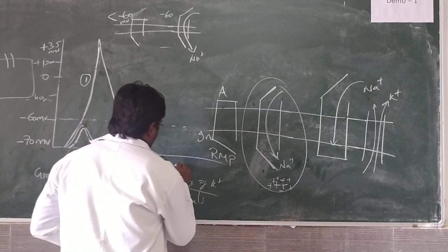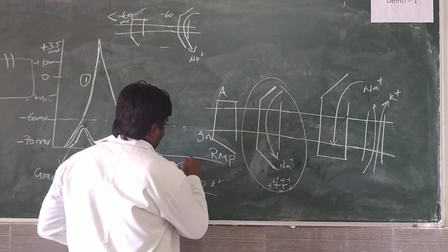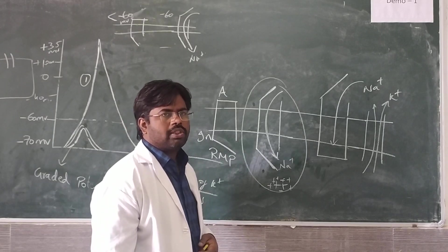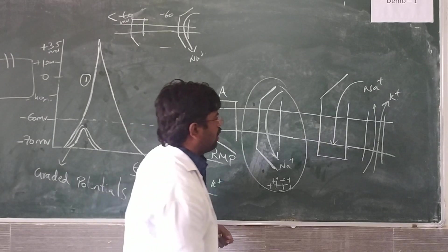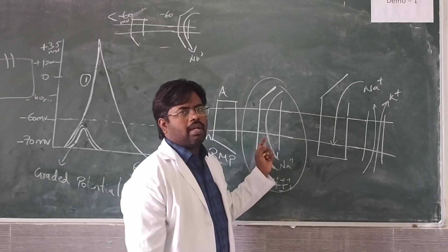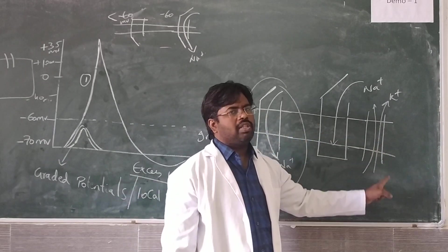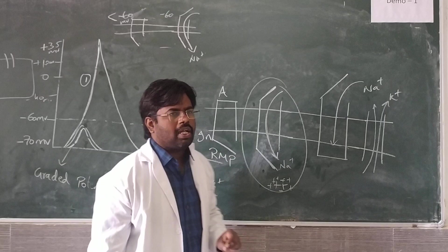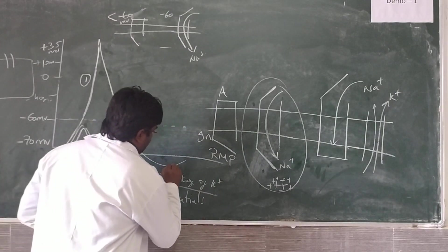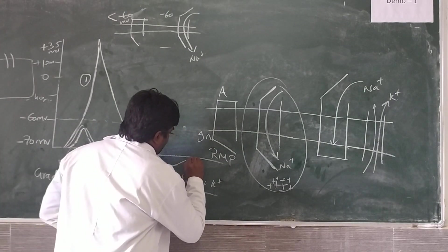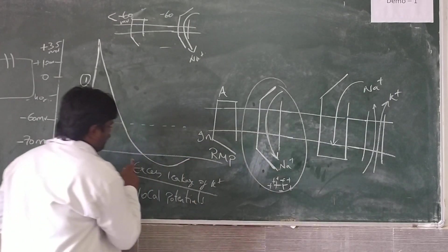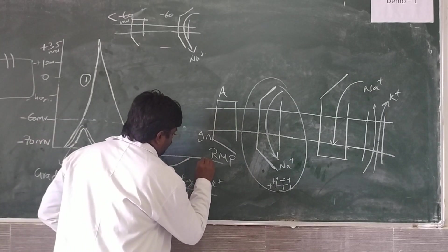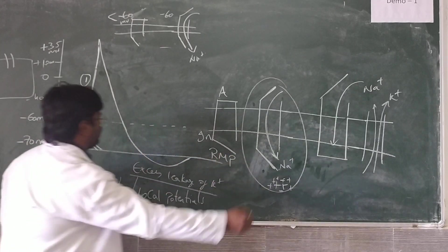Again, due to the closure of voltage-gated potassium channels and continuous opening of leaky potassium channels, this excess negativity will again come back to the resting membrane potential.